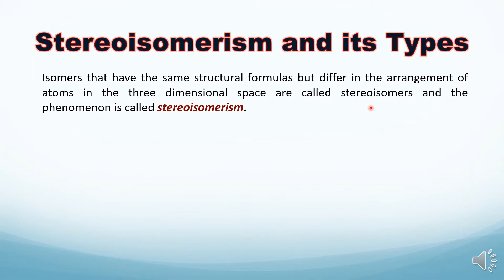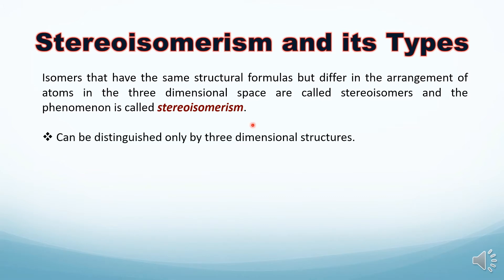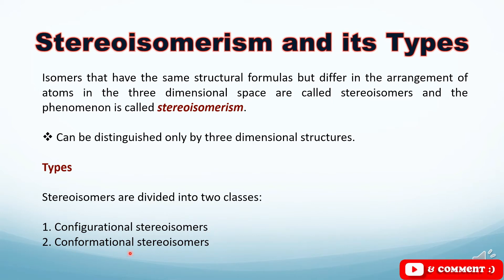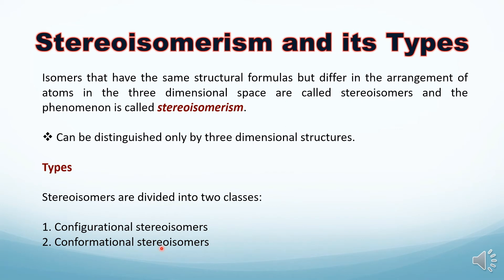Stereo isomers can be distinguished only by their three-dimensional structures. They are divided into two classes: the first class is configurational stereo isomers, and the second class is conformational stereo isomers. In this lecture we will go through them briefly, but in the upcoming lectures we will discuss them in detail.